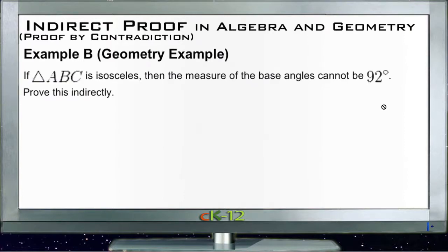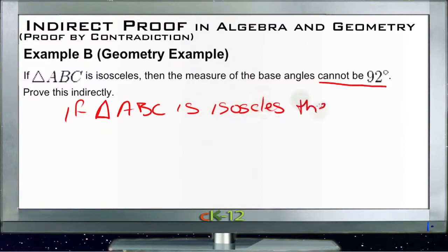So let's take a look at Example B. Example B says if triangle ABC is isosceles, then the measure of the base angles cannot be 92 degrees. So what we need to do then is change that statement so that it says if triangle ABC is isosceles, then the bases equal 92 degrees.